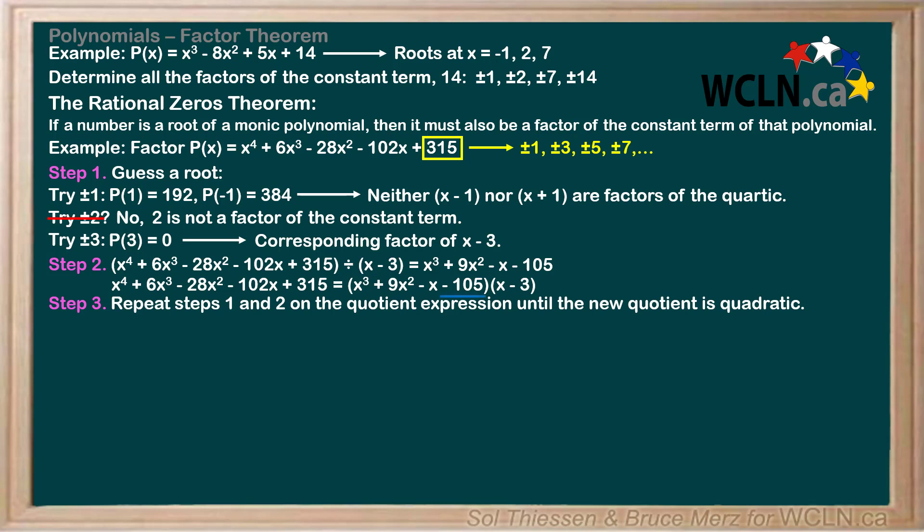Notice that the constant term of our quotient, negative 105, is the constant term of the original function, 315, divided by negative 3, since the quotient came from dividing the original quartic by x minus 3. This means that the two constant terms will share many common factors, including plus or minus 1, plus or minus 3, plus or minus 5, and plus or minus 7.